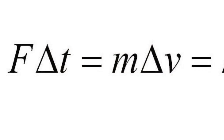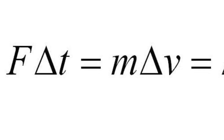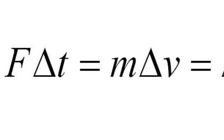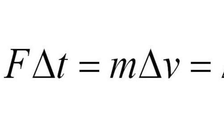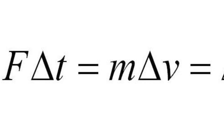This experiment is based off of one fairly simple concept: the impulse-momentum theorem. The theorem is defined as the change in the momentum of an object equals the impulse applied. Essentially, the change in the egg's velocity times its mass equals the force applied to stop it, times the amount of time it was applied.